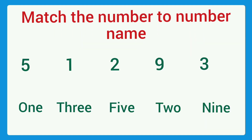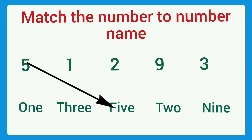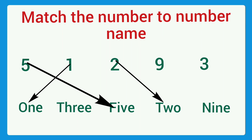Next: match the number to its number name. First: five — O-N-E — it's here, match it. Next: two — where is two? It's here, match it. Next: nine — N-I-N-E — it is here, match it. And last one: three — it's here, match it.